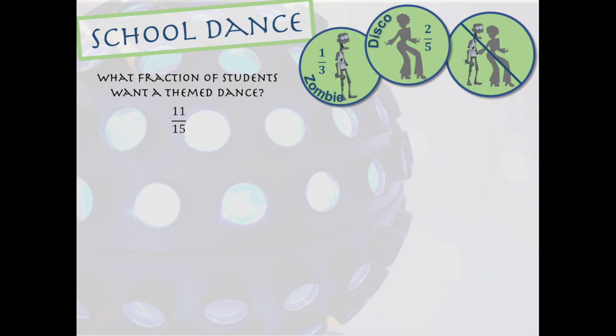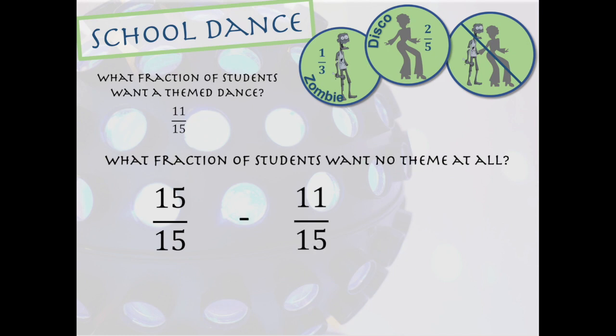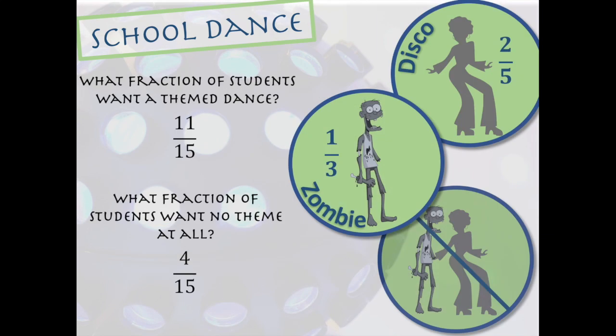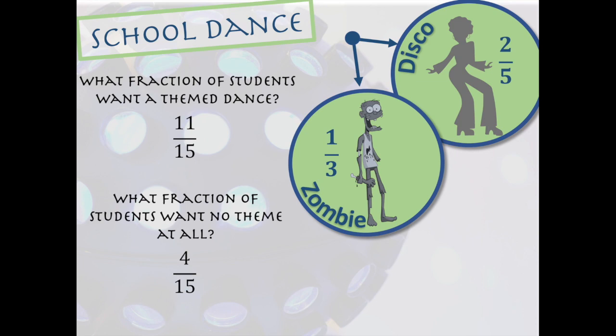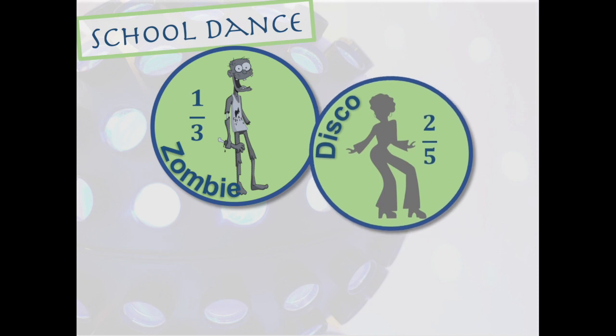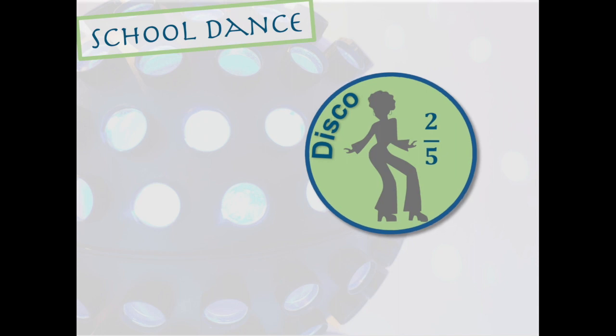But what about the second question? What fraction of students want no theme at all? To represent the whole student body, we can say fifteen out of fifteen. That's everyone. Then we'll subtract those who want a theme. The denominators are already the same, so we just take eleven from fifteen, and we get four-fifteenths. And now we've answered both of our questions. It looks like most students do want a themed dance. It'll either be zombies or disco. So now what do we do? Well, let's use our transformed fractions from before to compare those who want zombies to those who want disco. Using our least common denominator of fifteen, we transformed one-third into five-fifteenths, and two-fifths into six-fifteenths. Now we can just compare those two fractions. Six-fifteenths is bigger than five-fifteenths, so it looks like zombies is out! And it's gonna be a disco party!